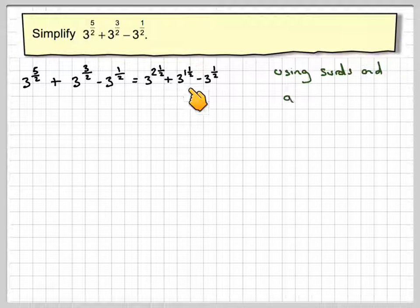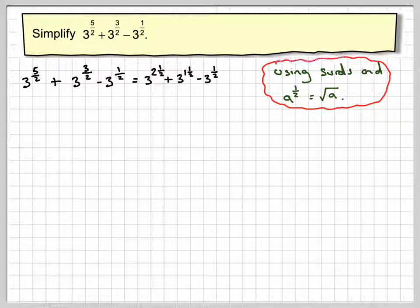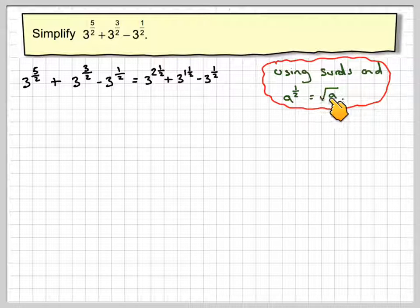We can't add these directly because of the plus and minus. So we're going to use surds and the fact that a to the half is equal to root a.